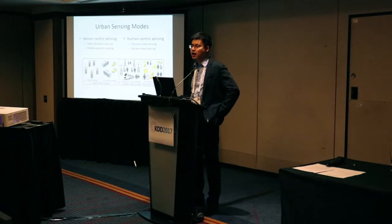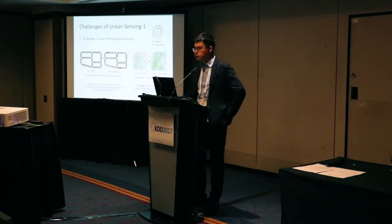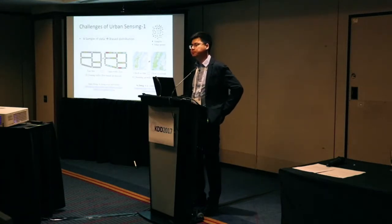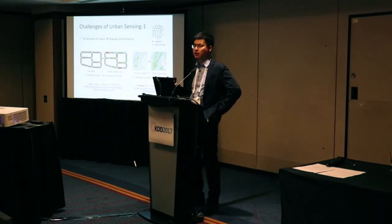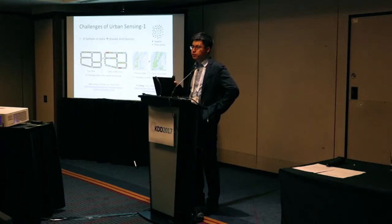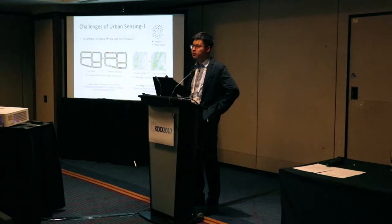What are the challenges for urban sensing? I summarize them into four categories. The first is called bias distribution. Typically, what we can collect in a city is a sample of data instead of the entire dataset. The distribution of some property in the sample might be very different from the distribution in the entire dataset.